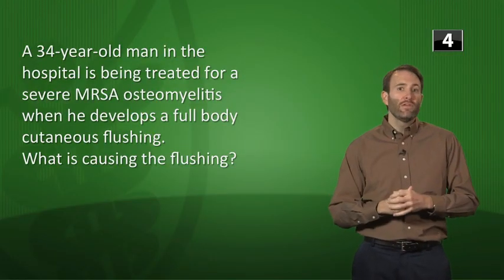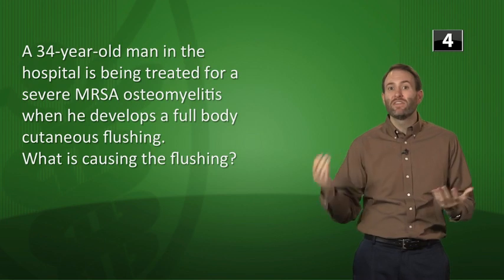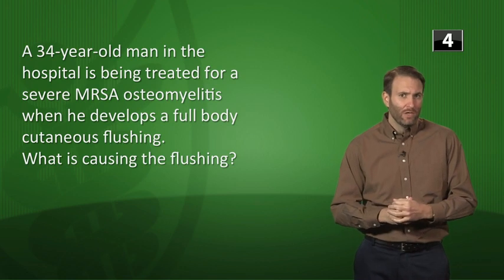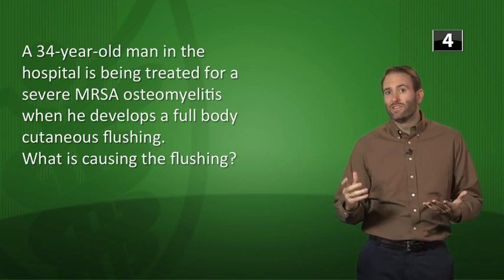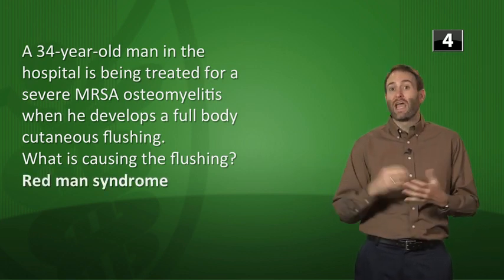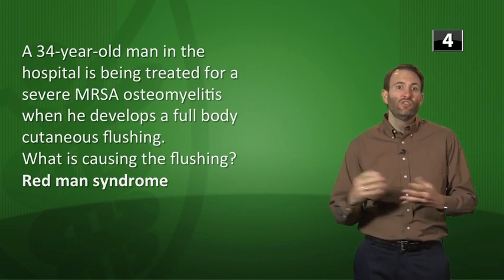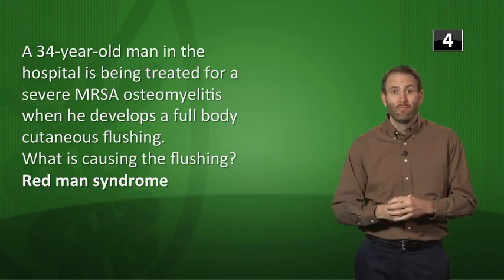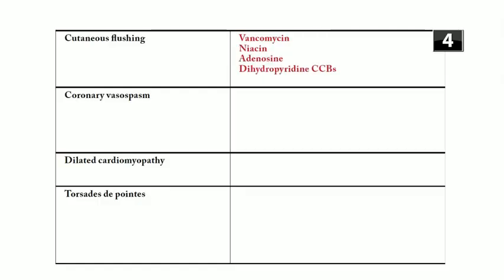Vignette: a 34-year-old man being treated for severe MRSA osteomyelitis develops full-body cutaneous flushing. When you hear MRSA, think vancomycin — this is Red Man syndrome. It's not a true drug allergy, but you need to slow down the infusion and pre-treat with antihistamine. Other causes of flushing include niacin (used for low HDL), adenosine (a potent vasodilator), and the dihydropyridine calcium channel blockers via smooth muscle relaxation.